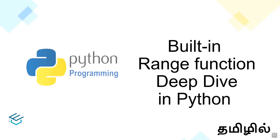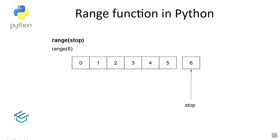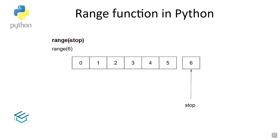We will talk about the range function and its format. In the first example, we will talk about range with a stop value — the number of sequence numbers. We will talk about range of 6 and the range of values it produces.